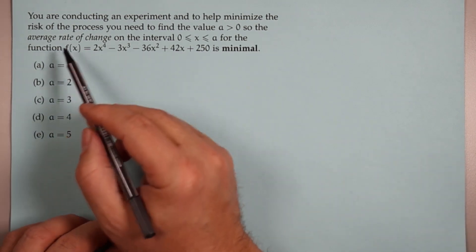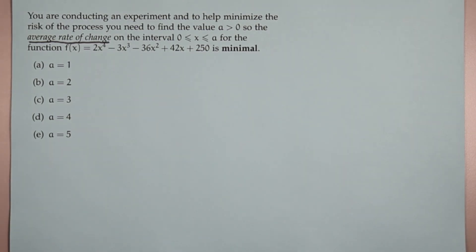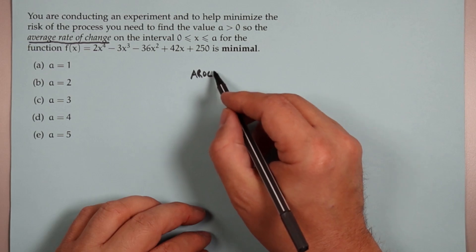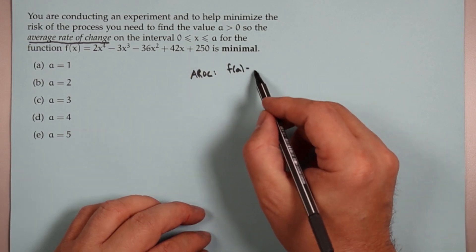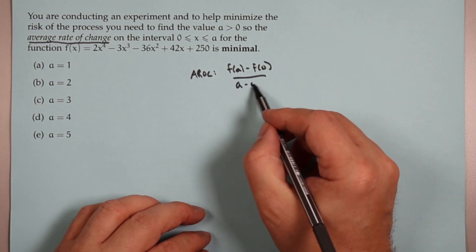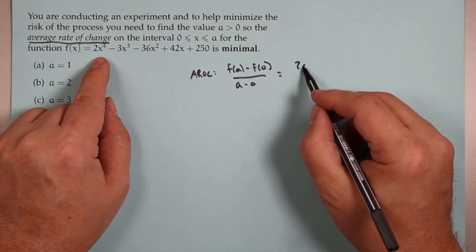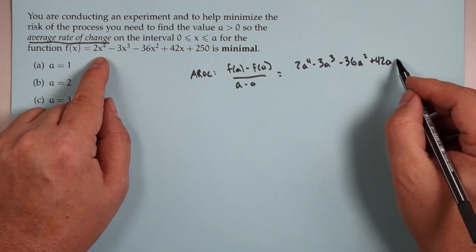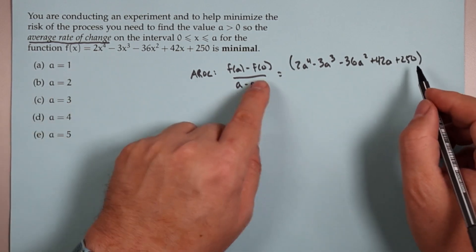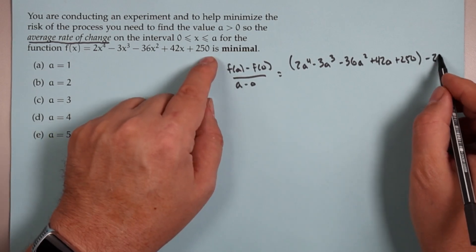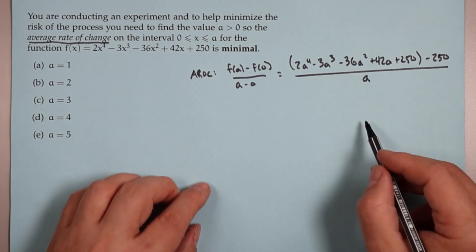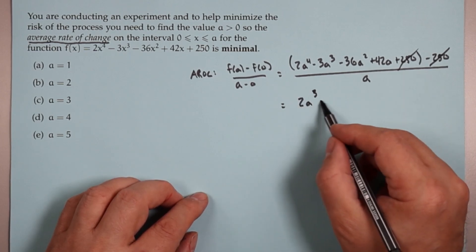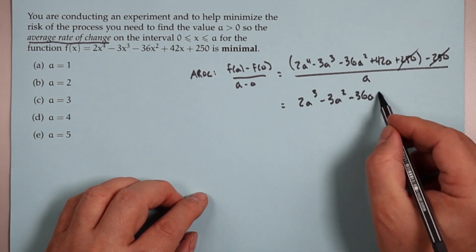So what do we need? We need to talk about average rate of change. Average rate of change on the interval from 0 to a would be f(a) minus f(0) over a minus 0. So f(a) is 2a⁴ minus 3a³ minus 36a² plus 42a plus 250. Subtract f(0) — that's 250. Divide by a minus 0, which is a. The 250's cancel. Everything is divisible by a. That gives us 2a³ minus 3a² minus 36a plus 42.